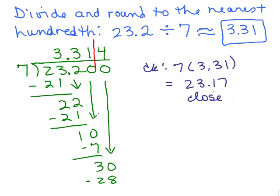So it seems reasonable that 3.31 is possibly the right answer because 23.17 is close to, you could think of this as 23.20.